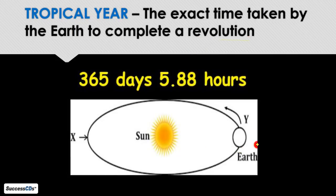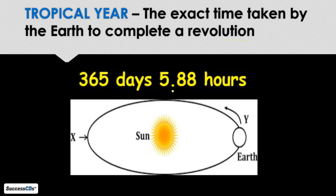Here you can see this is our earth. It moves around the sun — that is called a revolution. Now the earth takes 365 days and 5.88 hours to complete one trip around the sun.